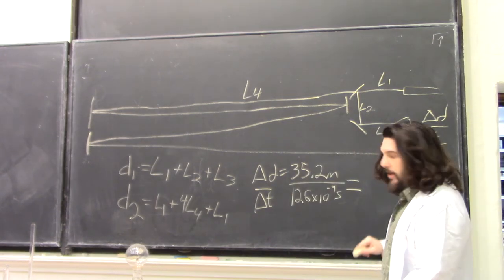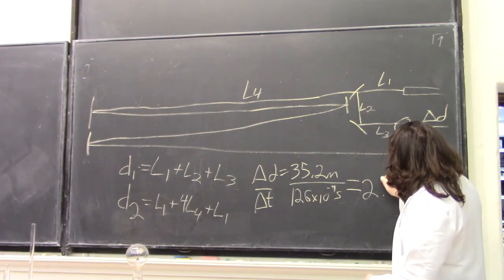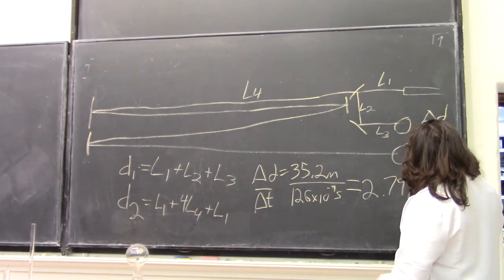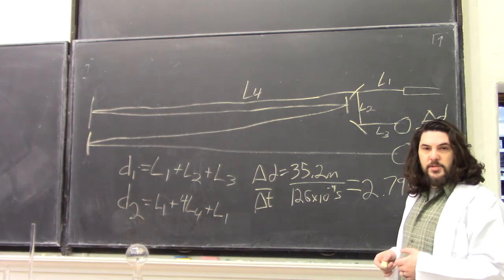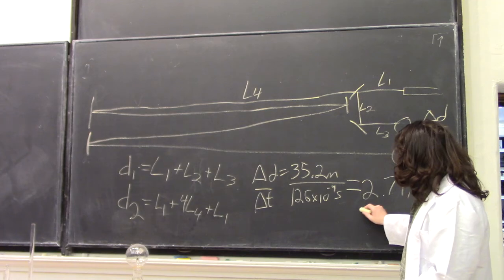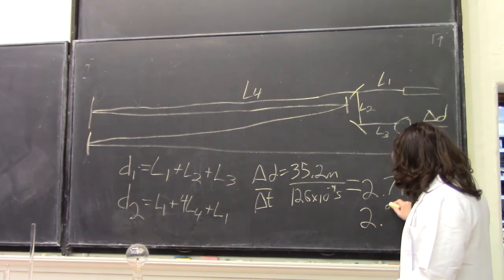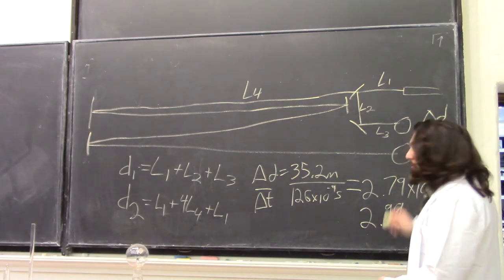We end up with a speed of 2.79 times 10 to the eighth meters per second, which is about 7% off from the actual accepted value, 2.99 times 10 to the eighth.